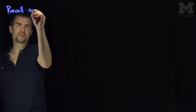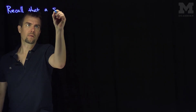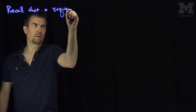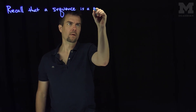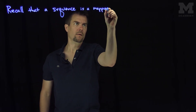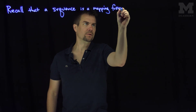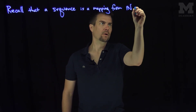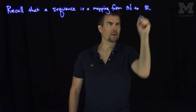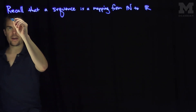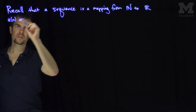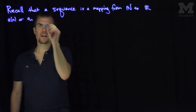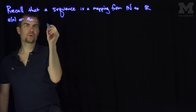Let's recall that a sequence is a mapping from the natural numbers to R. And typically we'd write this as a of n, or, as more typical, we write it as a sub n. So for example, we'd have this. That's our notation.